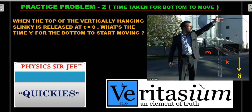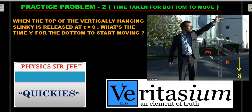Practice Problem 2 is from the famous Veritasium video — a very old one I've been showing students for years. He talks about dropping a hanging slinky: when released, the top moves but the bottom doesn't for some time. He explains why, but doesn't calculate the time. Our job is to do that. When the top of a vertically hanging slinky is released at t = 0, find the time t for the bottom to start moving. Express your answer in terms of m, k, and g, with all ideal conditions from Problem 1 assumed.